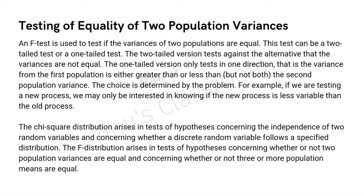To test for the equality of two population variances, we use the F-test. Just as we have the t-test and the z-test, here we have the F-test, which is used to test whether the variances of two populations are equal or not. Like other tests, the F-test can also be two-tailed or one-tailed. The two-tailed version tests whether variances are not equal; the one-tailed version tests whether the variance is greater or less. The choice depends on the problem.